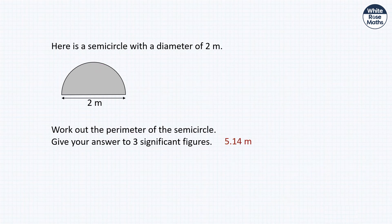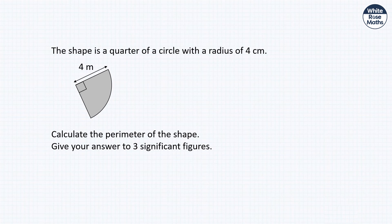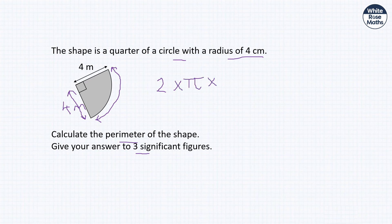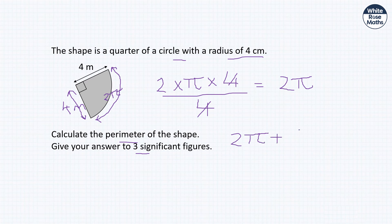A quarter circle with radius 4 centimetres — calculate the perimeter to three significant figures. The arc length is (2πr) ÷ 4 = 2π. The total perimeter is the arc length plus the two straight edges: 2π + 4 + 4 = 2π + 8 ≈ 14.3 centimetres to three significant figures.